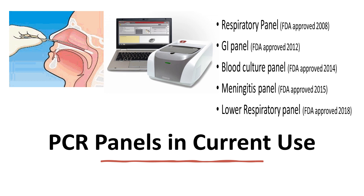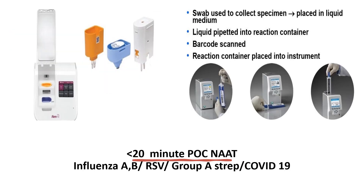PCR panels currently in use include respiratory panels, GI panels, blood culture panels, and meningitis panels. Swabs are used to collect specimens, which are placed in a transport medium; the liquid is prepared in a reaction container, a barcode is scanned, the reaction container is placed into the instrument, and results are available within 20 minutes by nucleic acid amplification — detecting influenza A, influenza B, RSV, Group A Streptococcus, and others.